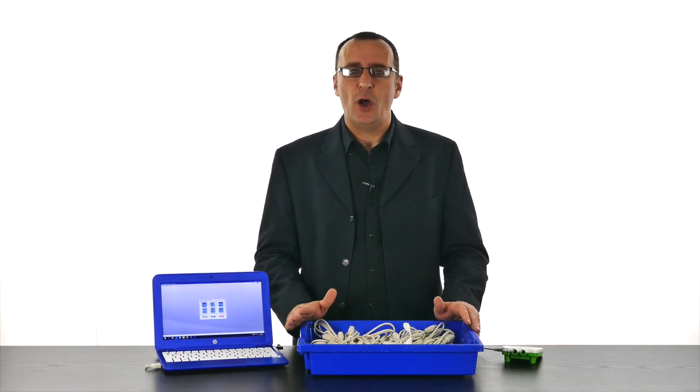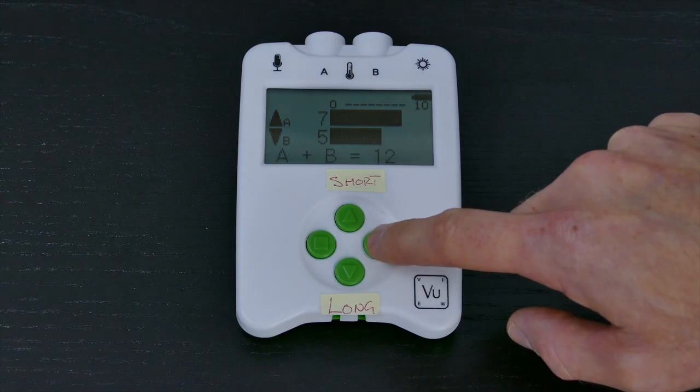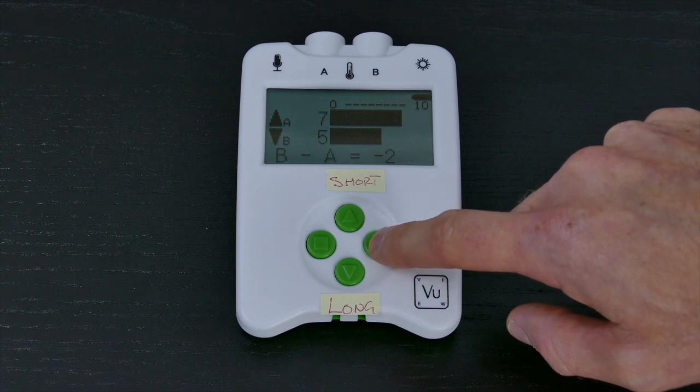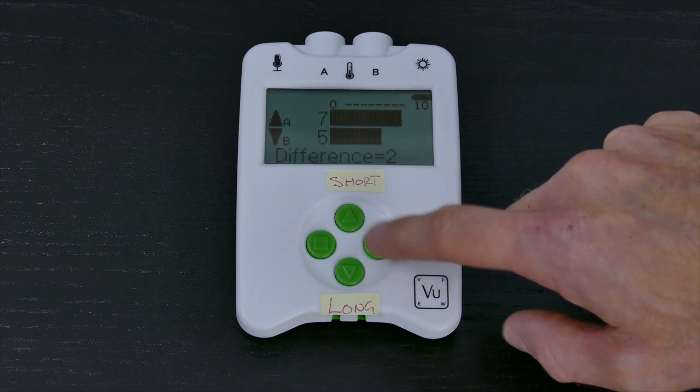Use the right arrow button on VIEW to find the total counted A and B, and the difference in number between A and B.